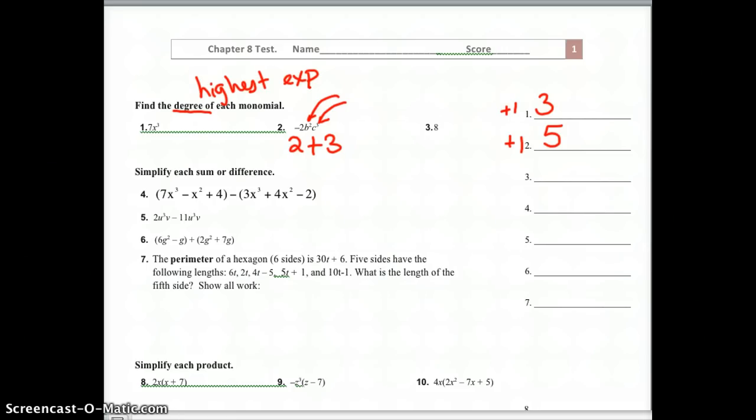And number three might say, well, there is no exponent. Well, that means that it wasn't 8x to the first, it was 8x to the zero, because remember last chapter we said anything to the zero power is 1. So this one right here would be to the zero degree.